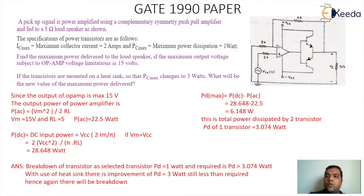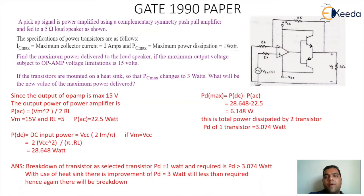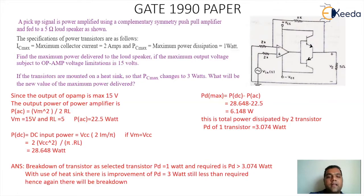This 6.148 watt is the total power dissipated by the two transistors, so each individual transistor dissipates 3.074 watt. As per the given data, the maximum power dissipation supported by the transistor is only 1 watt — but each transistor needs to dissipate over 3 watt, so there is definite breakdown. In the second case, with a heat sink, PC max changes to 3 watt — but this is still less than the required 3.074 watt. So the circuit will face breakdown whether or not a heat sink is connected.